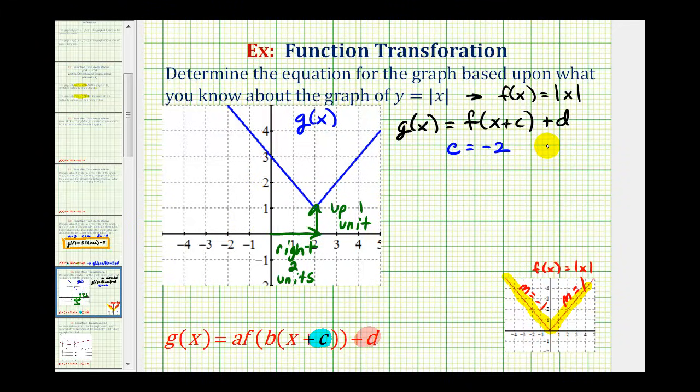But the value of d is more intuitive. If d is positive, the graph is shifted up d units, and if d is negative, the graph is shifted down d units. And because we have the shift of up one unit, d is positive one.